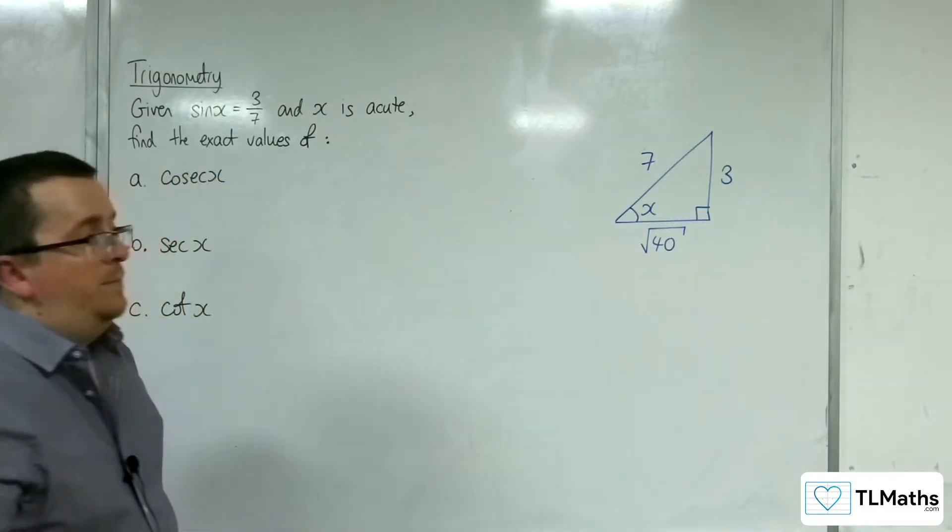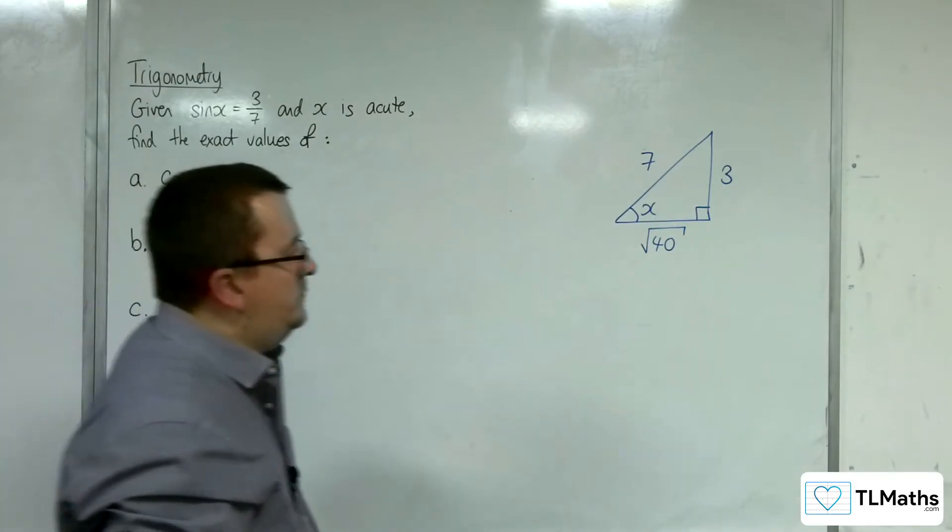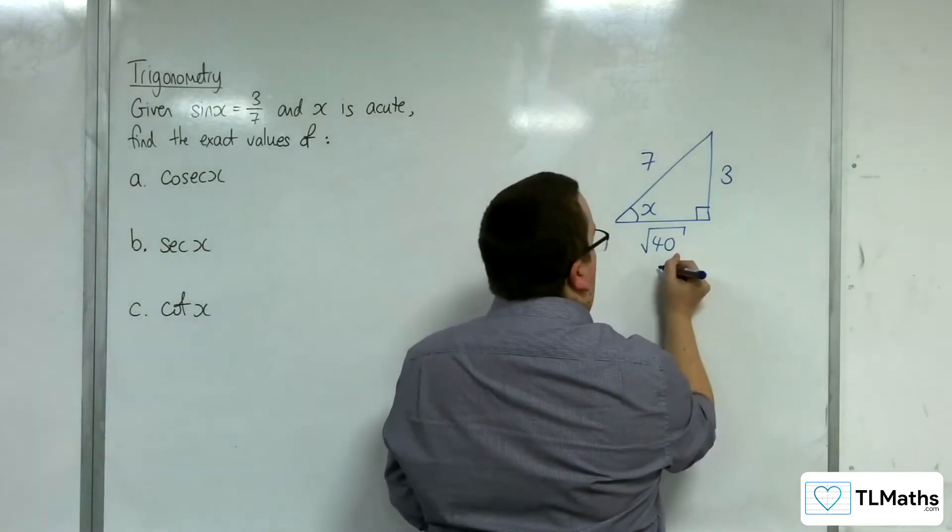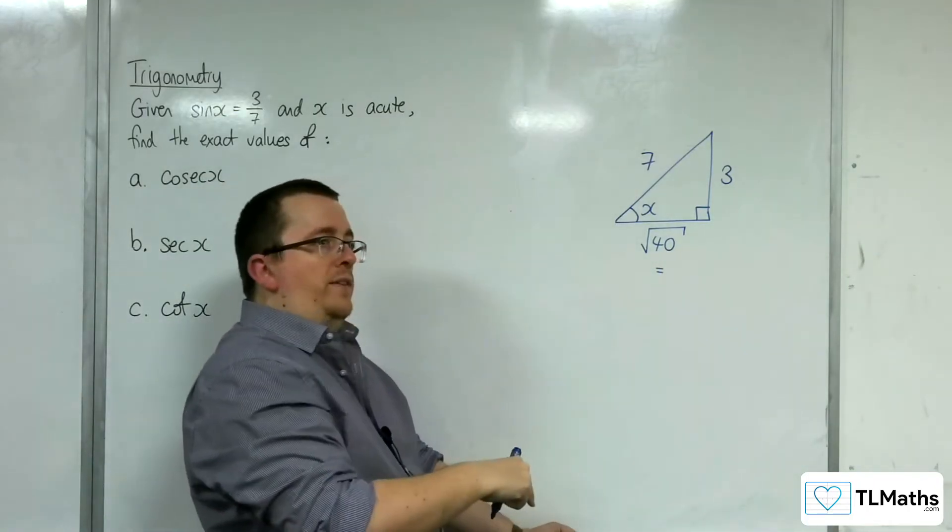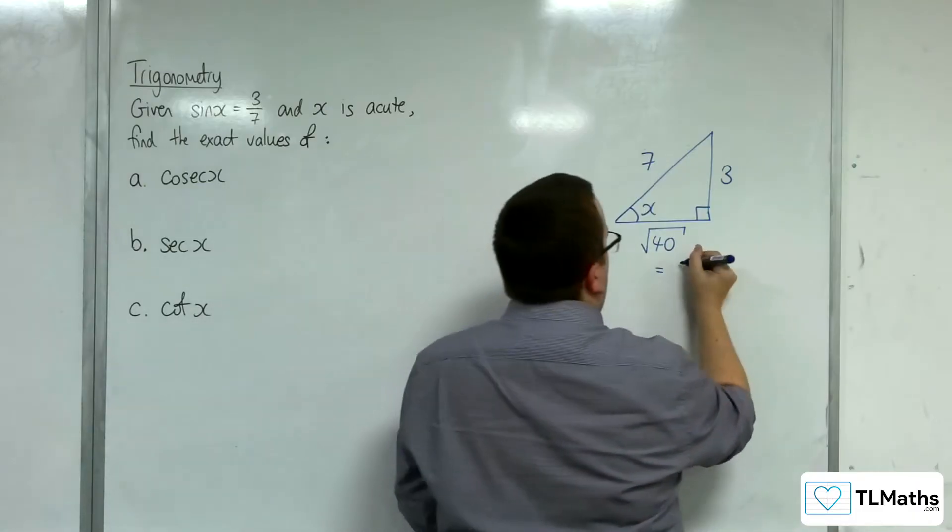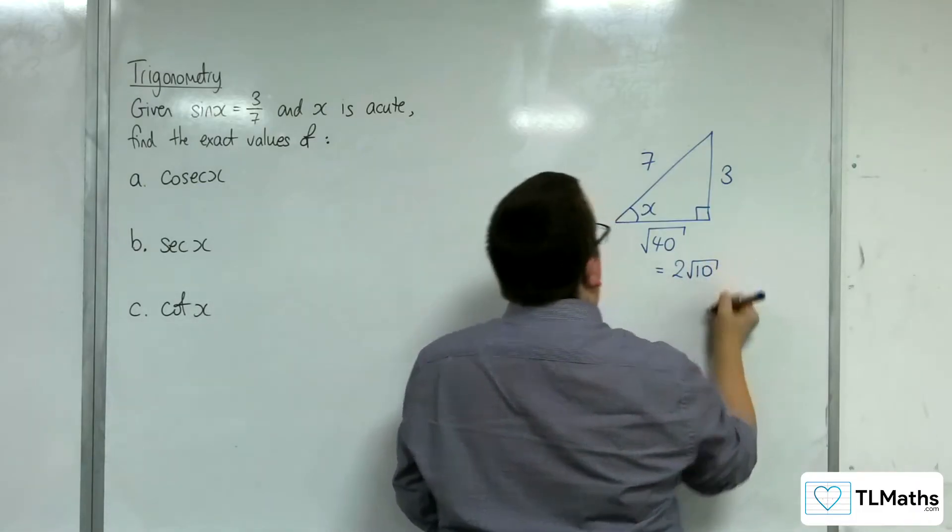Now that can be simplified. √40 = √(4 × 10) = 2√10.